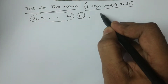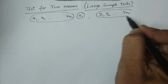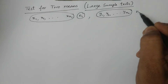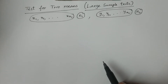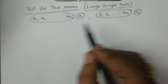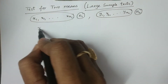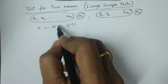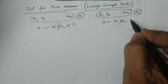Similarly, consider y1, y2, and so on up to yn2 as the sample observations. This is a second sample of size n2 drawn from another population. So we consider two normal populations and draw two samples — one from population 1 of size n1, and one from population 2 of size n2.